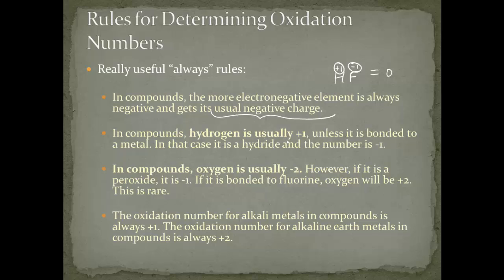Another always rule: in compounds, hydrogen is usually +1 — so often that it's called an always rule. The one exception is if hydrogen is bonded to a metal, in which case it would be negative, but that's very rare. For AP and pre-AP chemistry, hydrogen is always +1. Another always rule: oxygen is always -2. The one exception is the peroxide ion, where it is -1, and if bonded to fluorine, oxygen would need to be positive. But just remember: oxygen is always -2.